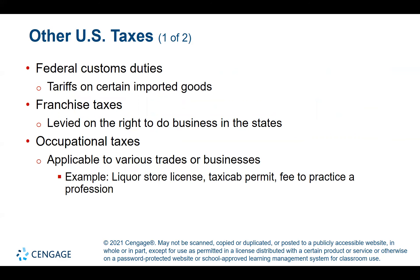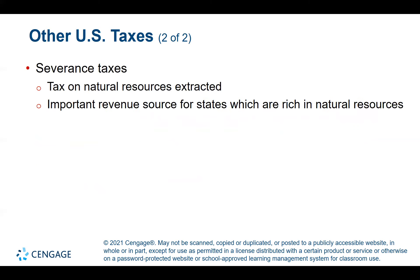Other U.S. taxes include customs and duties such as tariffs on imported goods, franchise taxes levied on the right to do business in states, and occupational taxes applicable to various business trades — like a liquor license, a taxi cab permit, or a fee to practice a profession such as cosmetology, where practitioners must annually renew their certification and pay a fee. There is also a severance tax on natural resources extracted, which is an important revenue source for states rich in natural resources.